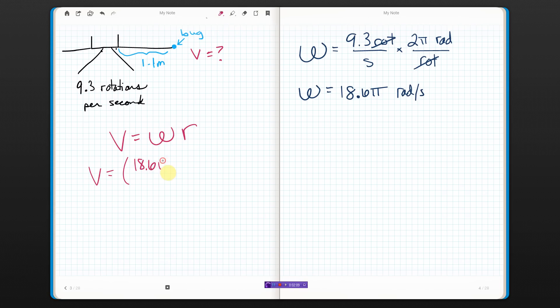18.6 pi radians per second times 1.1 meters. That gives me a V of 20.46 pi meters per second.